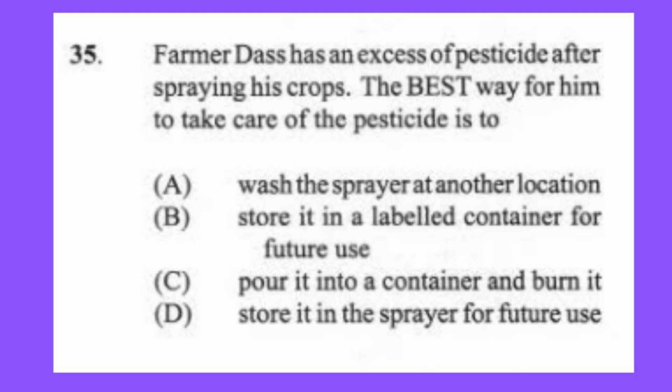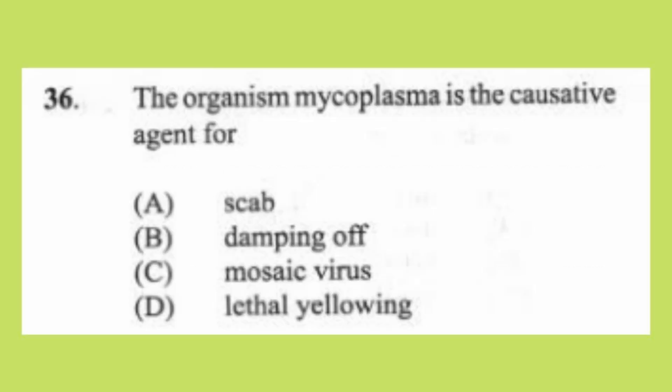Question 35: Farmer Doe has an excess of pesticide after spraying his crop. The best way to take care of this excess pesticide is to (a) wash the sprayer at another location, (b) store it in a labeled container for future use, (c) pour it into a container and burn it, (d) store it in the sprayer for future use. The answer is B, store it in a labeled container for future use.